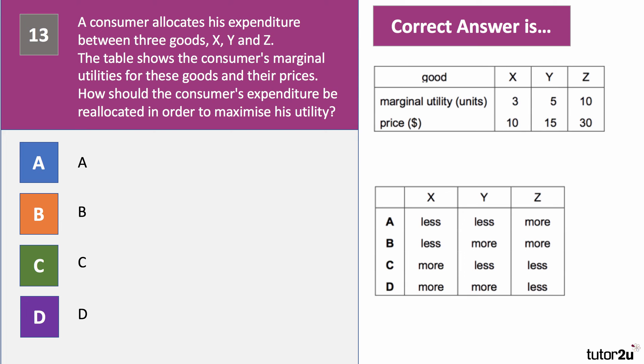Question thirteen is a question on utility theory. Somebody allocates their spending between three goods X, Y and Z. The table shows the marginal utilities for these goods and their prices. How should consumer spending be reallocated in order to maximise utility? The key is to equate the utility per pound spent. The right answer is B. For X, you're only getting 3 units of utility per pound spent, whereas for Y and Z you're getting 0.33 — a third is higher than 30%. So they should spend a little bit more on Y and Z and a little less on X.